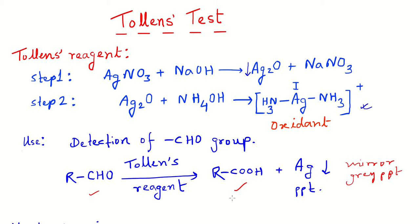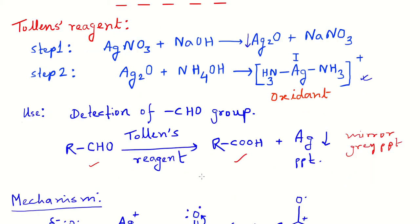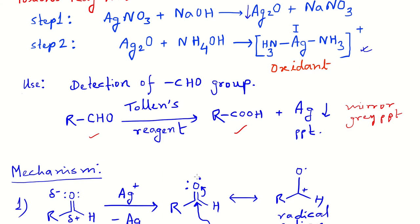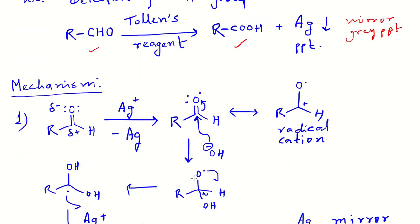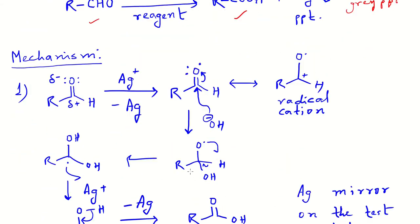Now we will discuss the mechanism of this reaction. Two types of mechanism are there; we will discuss step by step. In the first type of mechanism, the silver ion first oxidizes the lone pair or the non-bonding pair of electrons of the oxygen atom of the carbonyl group.